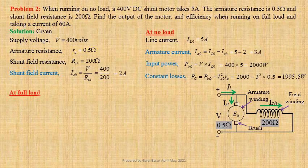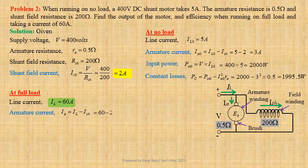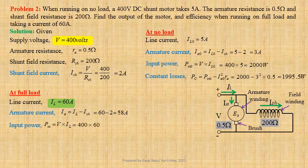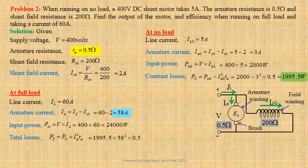When the motor runs on full load, line current IL equals 60A. Armature current IA equals IL minus ISH, that is 60 minus 2, giving us 58A. Input power PIN equals V times IL, that is 400 times 60, giving us 24,000W. Total losses PT equals PC plus IA² times RA, that is 1995.5 plus 58² times 0.5, giving us 3677.5W.